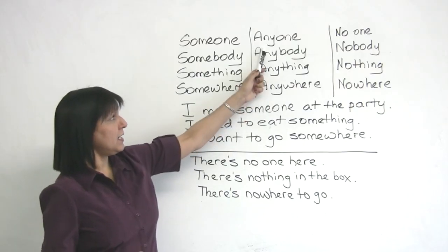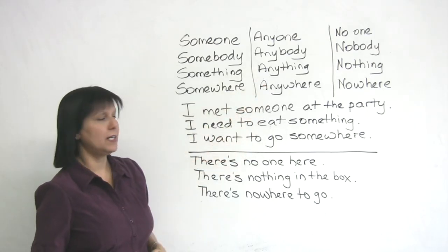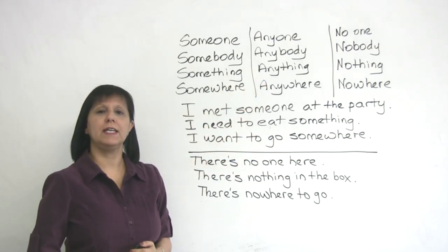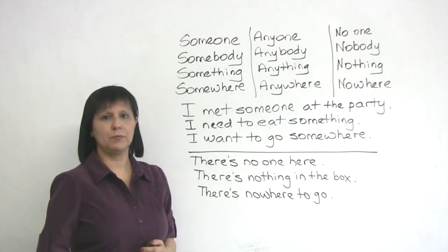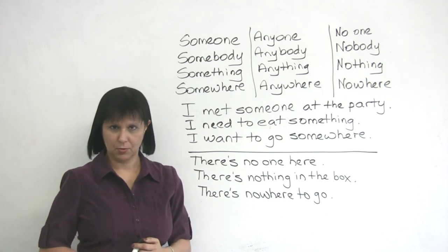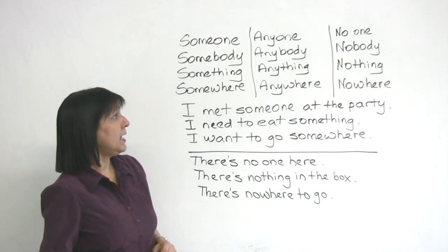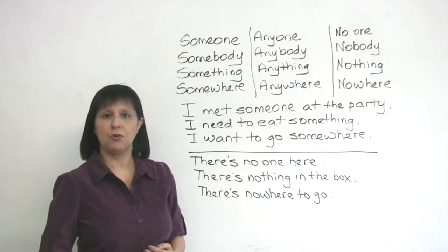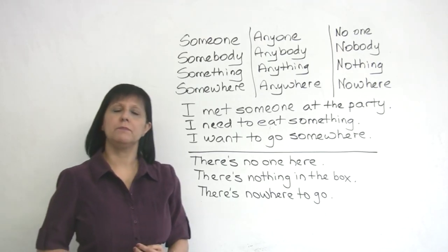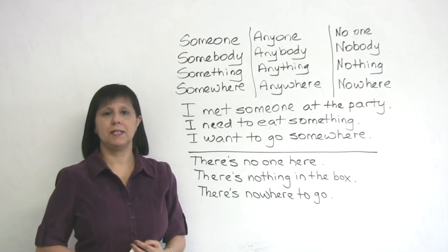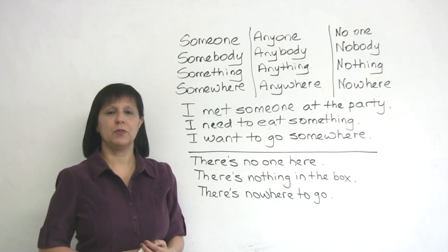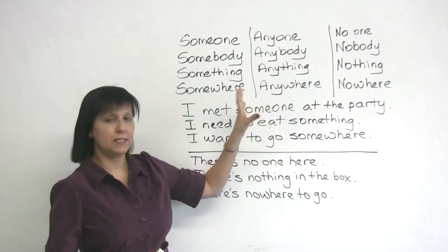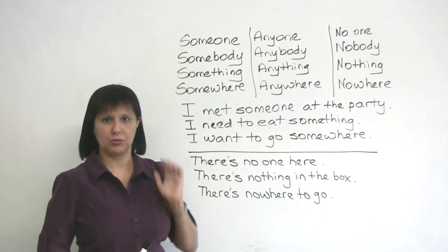We use anyone, anybody, anything, or anywhere when we're using a negative sentence or when we're asking a question. And we use no one, nobody, nothing, or nowhere also in positive sentences, but in positive sentences when there isn't even one item of that kind that we are talking about.